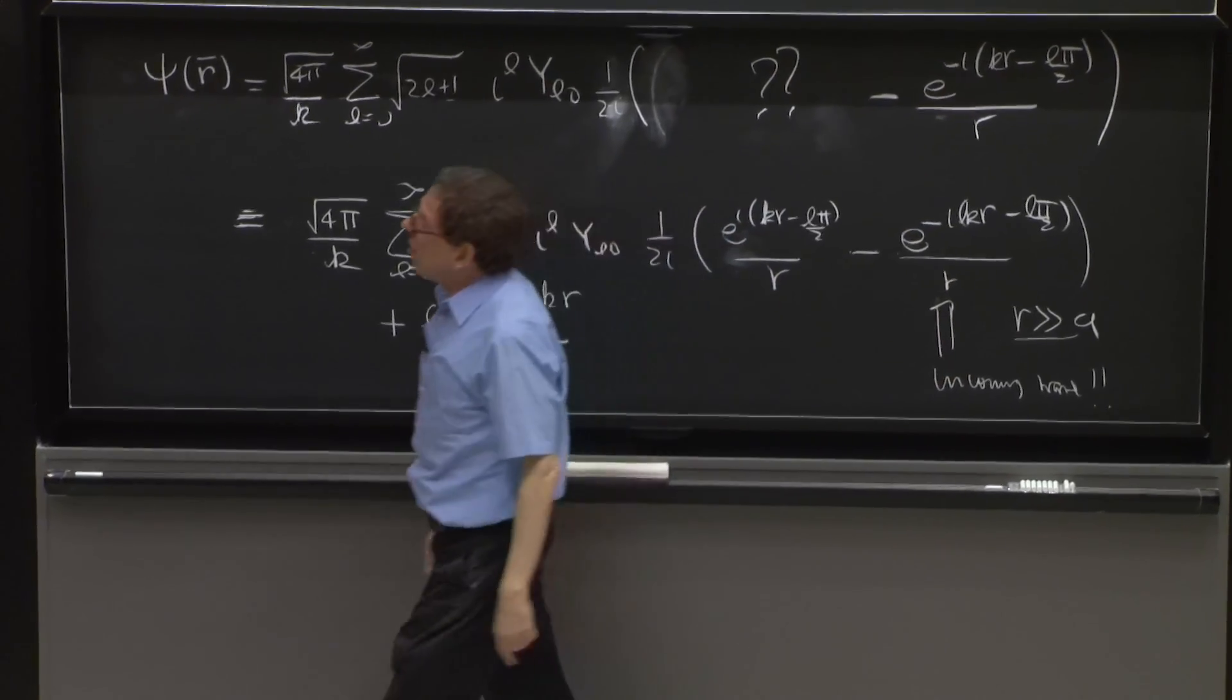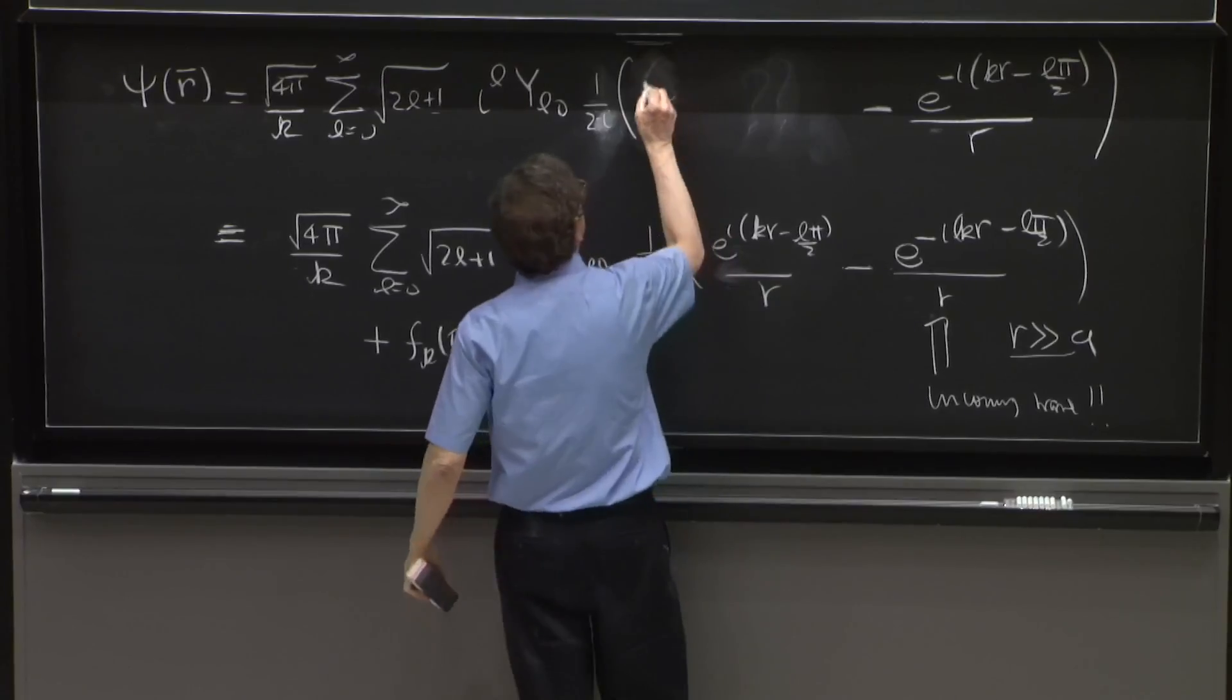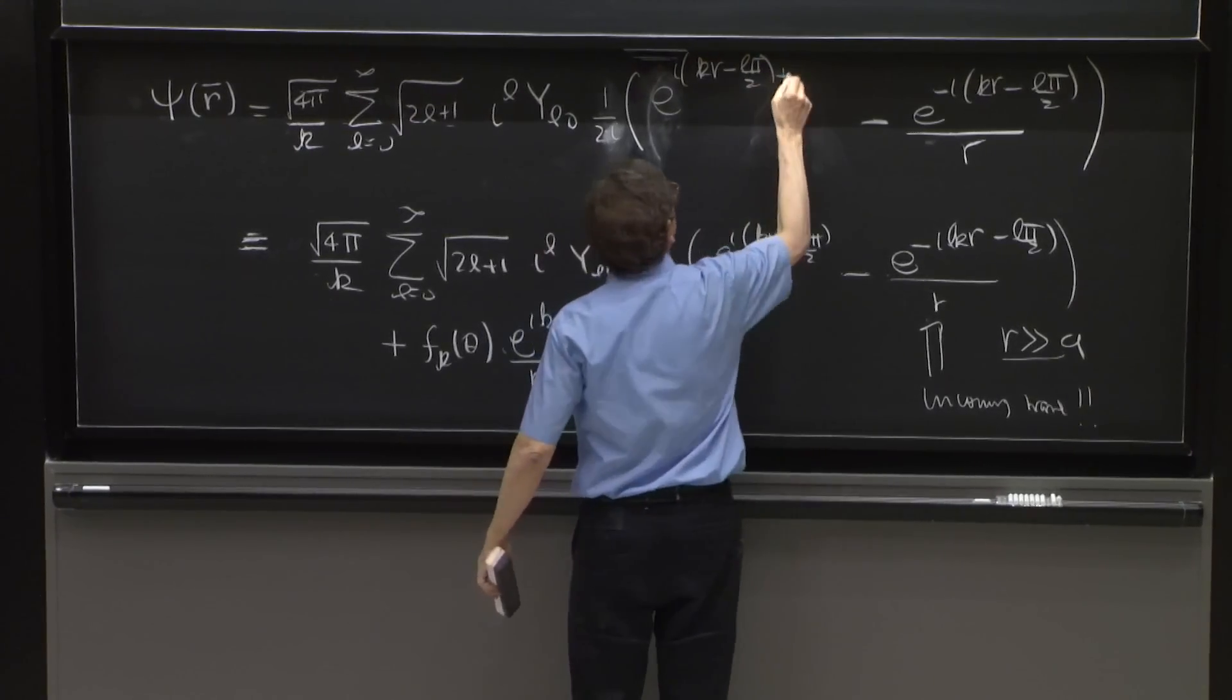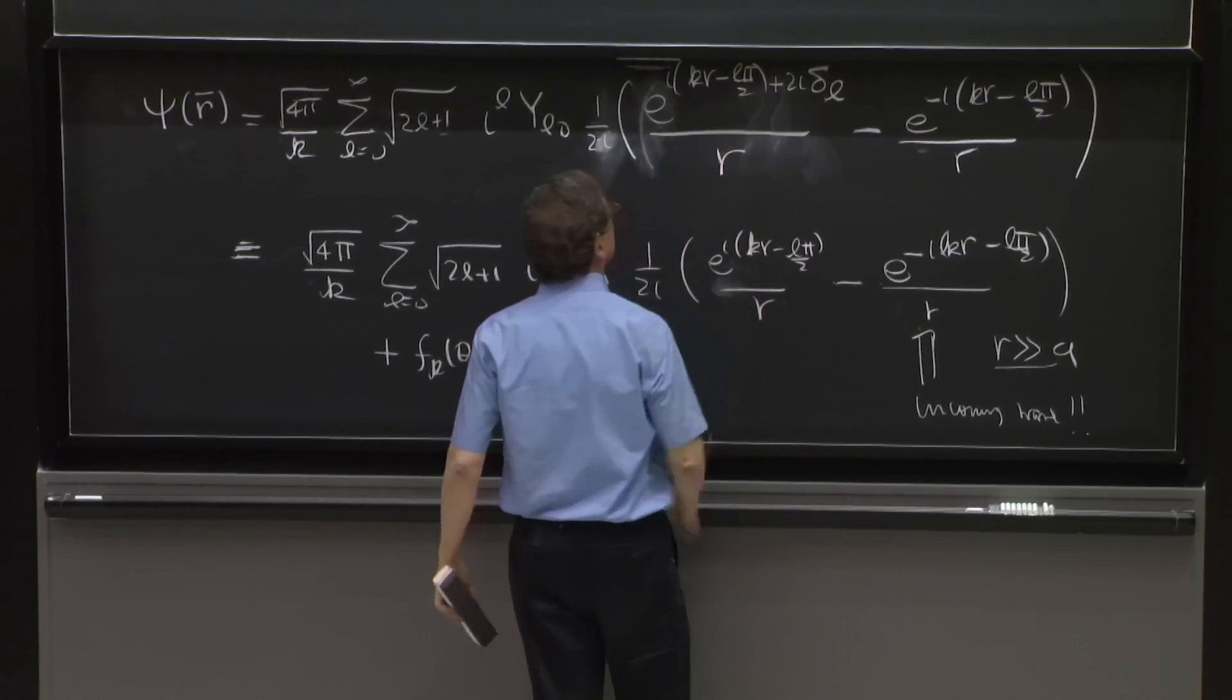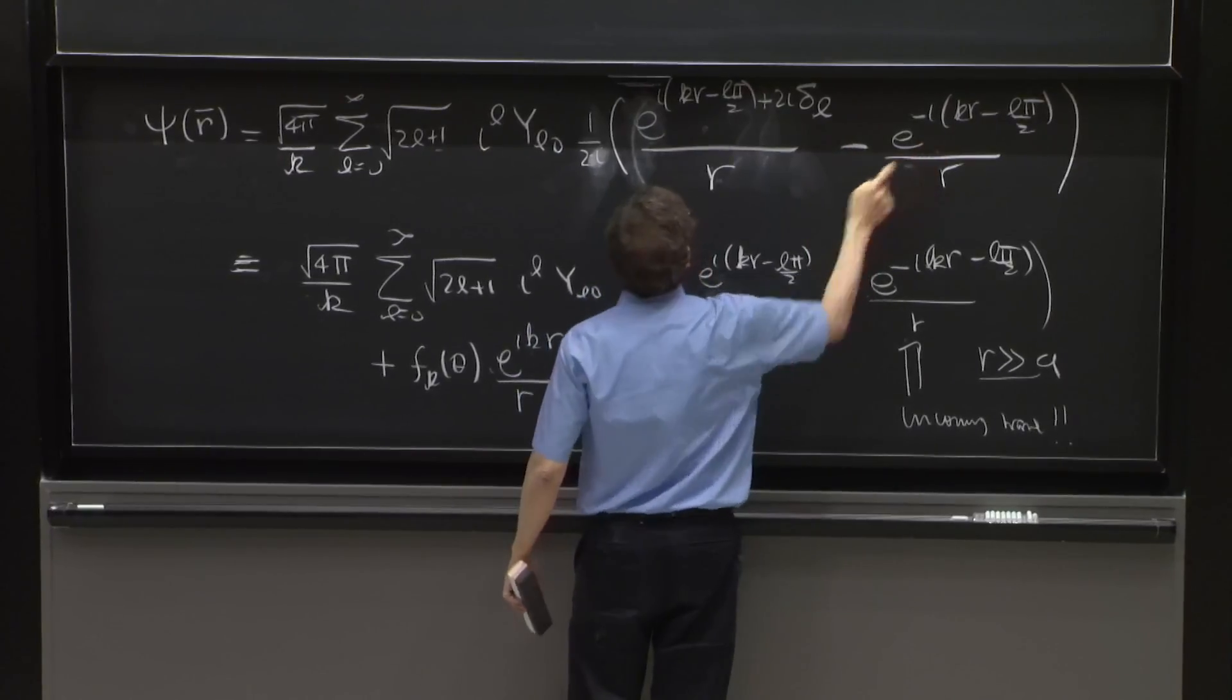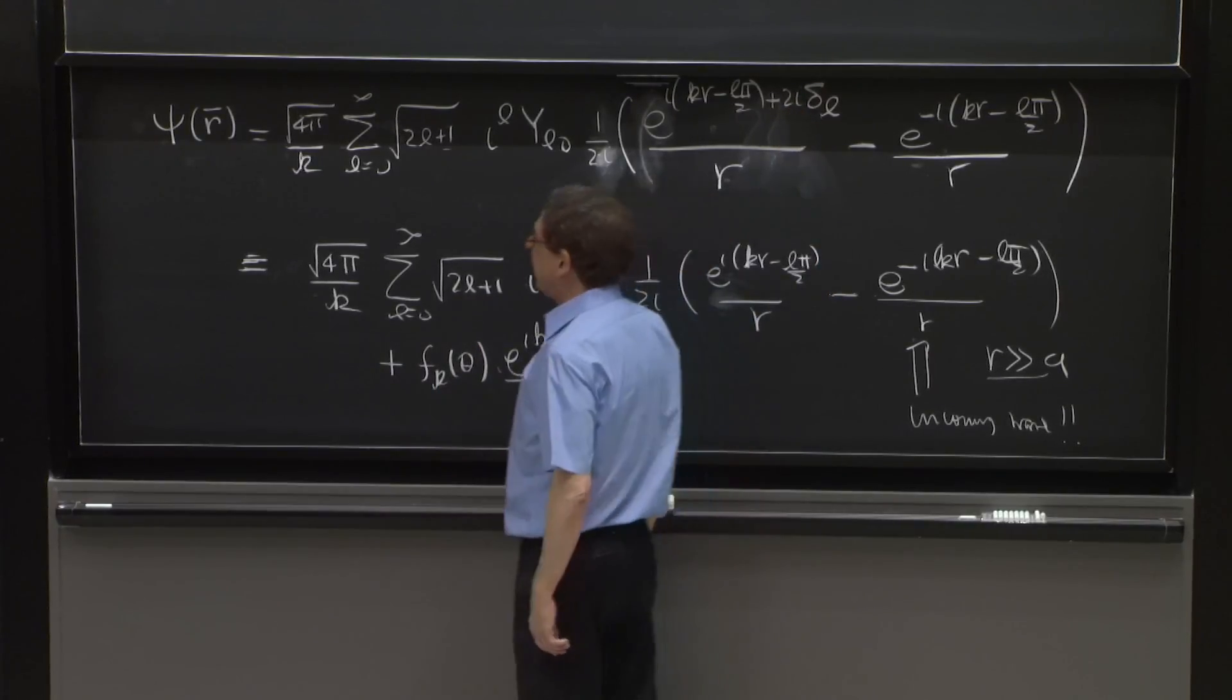So this must be an outgoing wave having the same amplitude as this wave. And by the argument we had here, it just differs by a phase. So we'll put here e to the i(kr minus Lπ/2 plus 2i delta_L) over r. So that it is a wave, a spherical wave, that it's outgoing. It has the same amplitude as this one. And it cannot be the same. The only difference can be a phase shift. And that's the phase shift.